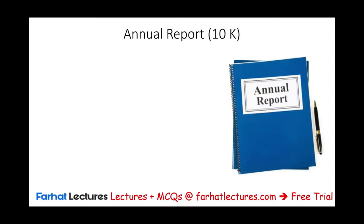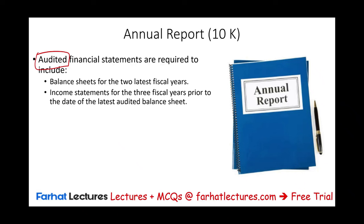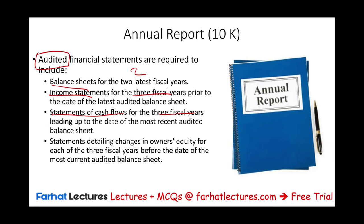Let's move on to the annual report — the 10K. The 10K has to be audited, in contrast to the quarterly, which only needs to be reviewed. You must include the most recent two fiscal years for the balance sheet and the most recent three fiscal years for the income statement and statement of cash flows, leading up to the date of the most recent audited balance sheet. You also need a statement detailing changes in owner's equity for each of the three fiscal years prior to the end of the current balance sheet.